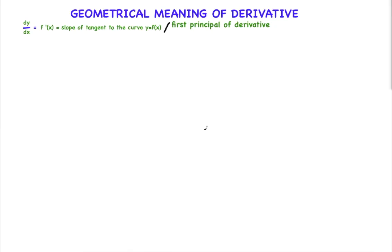Geometrical meaning of derivative. What is dy by dx? dy by dx is the derivative of y with respect to x. The geometrical meaning of dy by dx is the slope of the tangent to the curve y equals f of x.